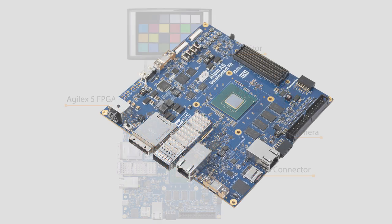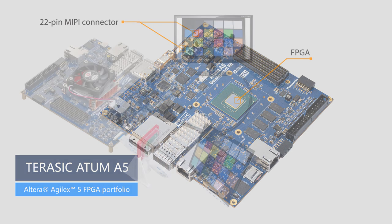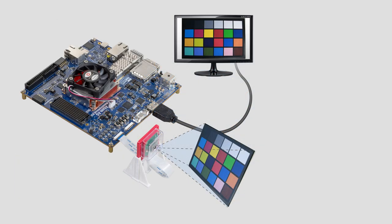The Terasic Atom A5 FPGA board used in this demo features two sets of 22-pin MIPI connectors. The input image signal from these connectors is directly delivered to the FPGA. The camera used is ArduCam's MIPI camera module, Terasic part number FXX3138ADC.